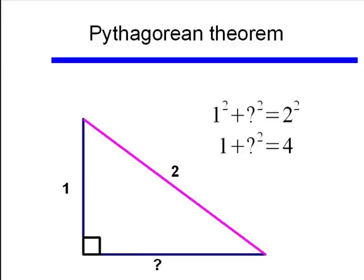But now, our unknown is one of the legs, and using this triangle, a 1 something 2 triangle, we'll have 1 squared plus that length squared equals 2 squared.